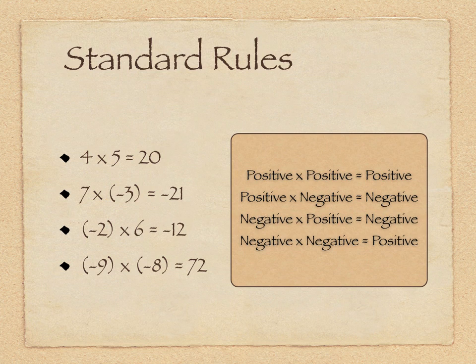And the final rule is anytime we multiply a negative times a negative, the product is positive. So we can see negative 9 times negative 8 equals positive 72, and that's probably the most confusing one for students. But we'll get into some detailed examples of why that's true.